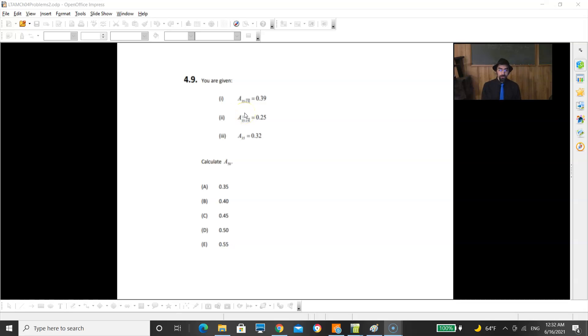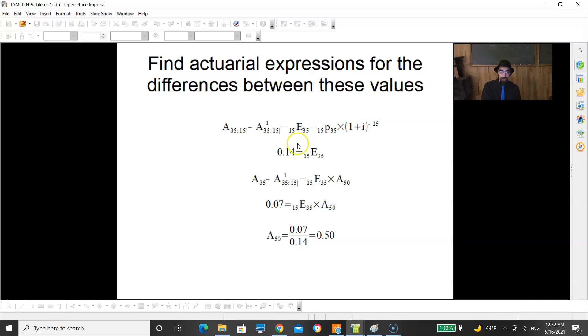The bigger deal is by how much. We said that endowment insurance minus term insurance equals pure endowment. So the pure endowment must be 0.14. And whole life insurance minus term insurance must equal deferred insurance. So the deferred insurance must be worth 0.07. The deferred insurance is endowment times Big A 50. I know what the endowment is, and so I crunch my numbers, and I get that Big A 50 is 0.5.